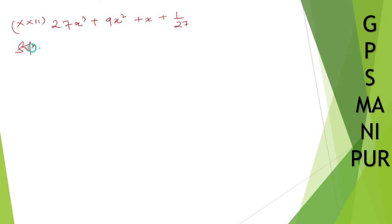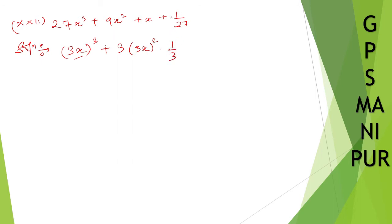Solution: 27x cube you can write down as (3x) whole cube. And 9x square — here thrice a is 3x, so thrice a square. And b is 1 by 3, so this can be written as 1 by 3.